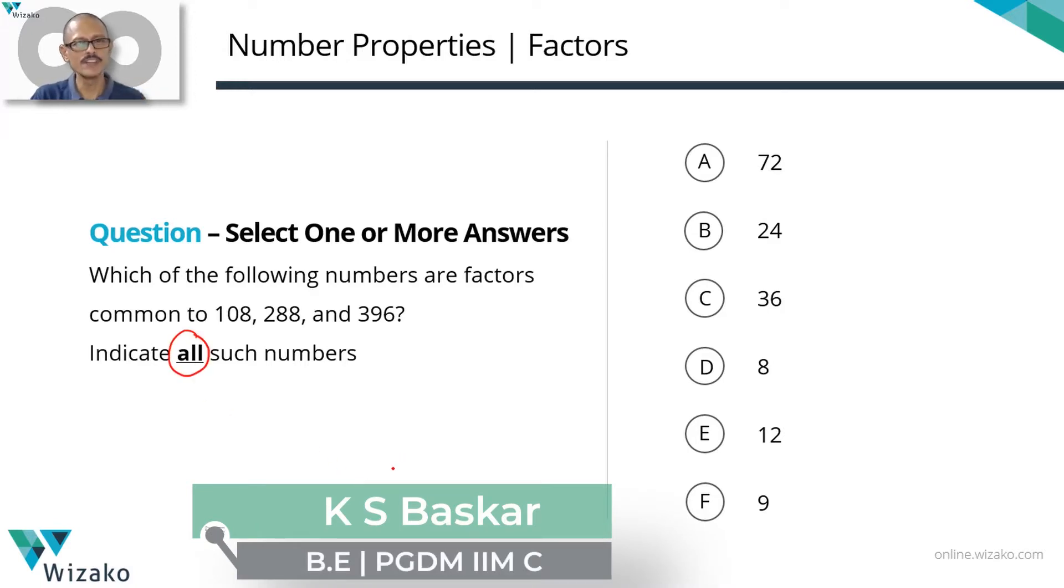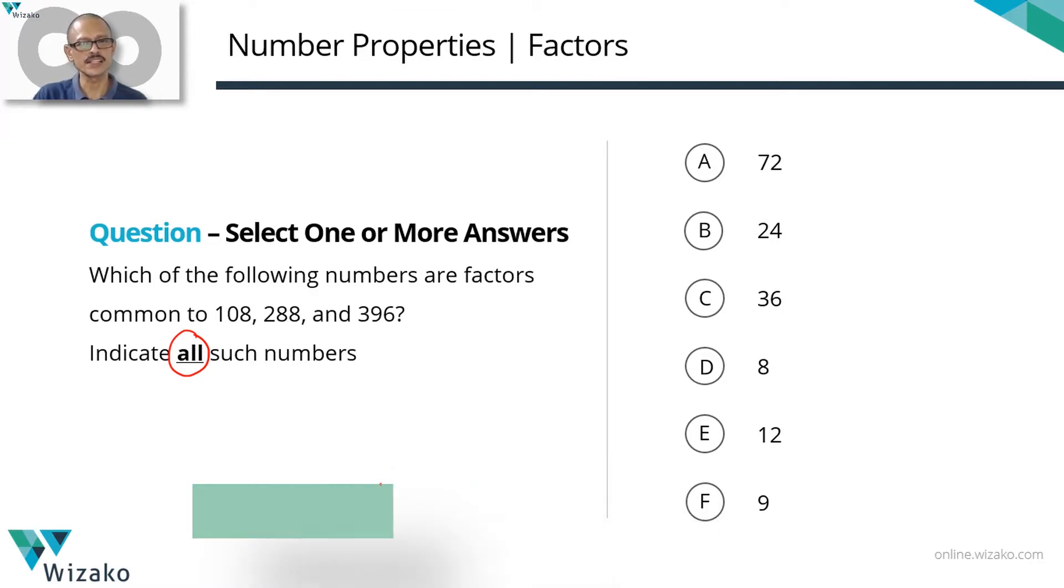These are actually the more difficult variants. We are not telling you how many of these answer options are right. So we need to select all answer options that are right and we need to select only those answer options that are right. From among these six numbers, we need to select those numbers which are factors common to all the three numbers.